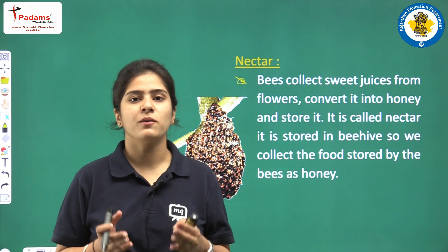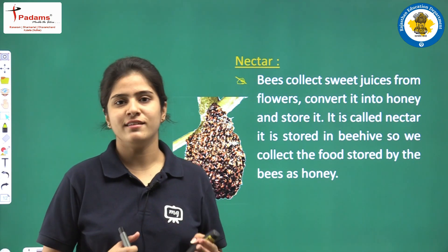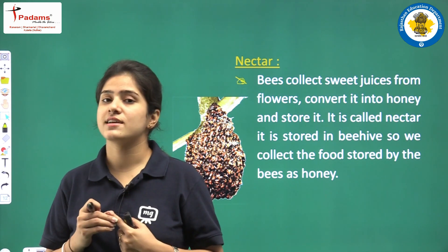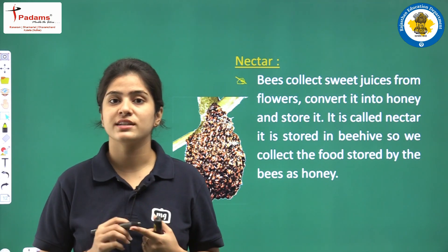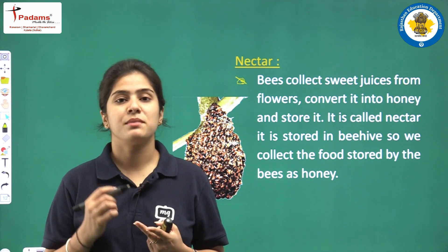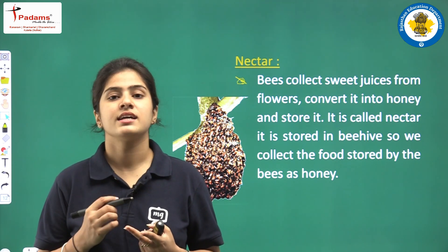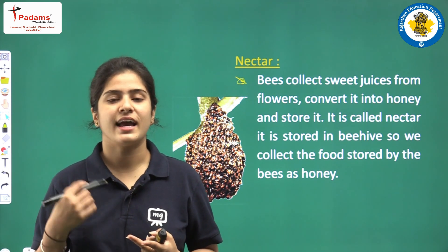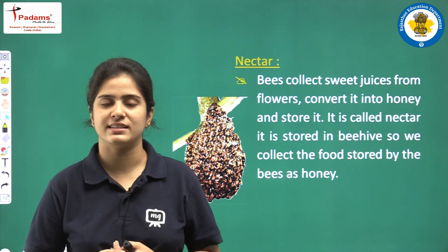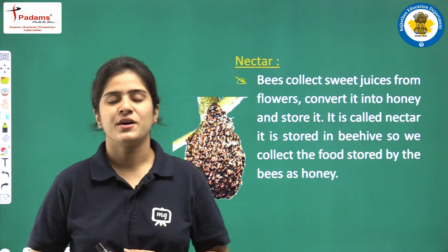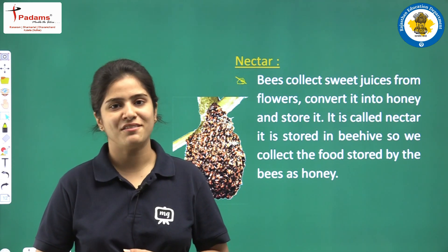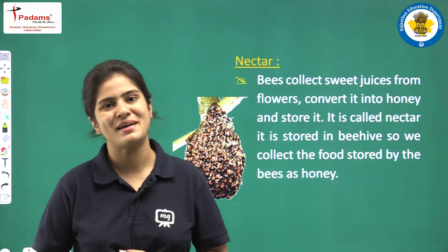This was all about part one of our chapter number one. We have discussed sprouted seeds, nectar, edible parts, plant parts, animal sources, plant sources, and the introductory part about variety of food. Hope you are all understanding. Have a nice day, do study at home. Bye-bye.